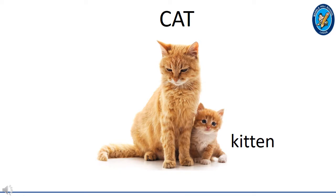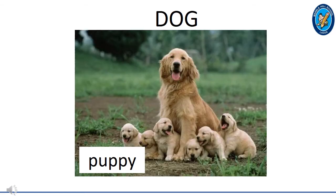This is a cat. Can you see the cute baby beside the mummy? The young one of a cat is called a kitten. This is a dog.